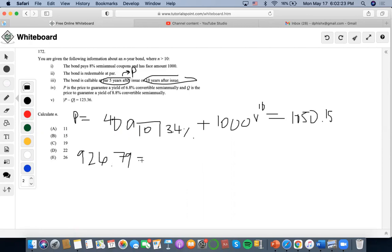Now I'm going to set up a bond pricing formula for the second bond. We know that the coupons are 40. We don't know the number of years, but we know it's being compounded semi-annually. We know that the yield was 4.4%, and it's going to be called at 1,000.